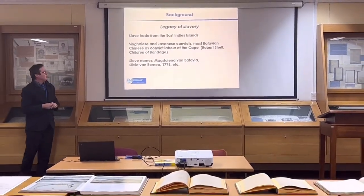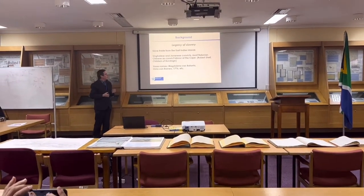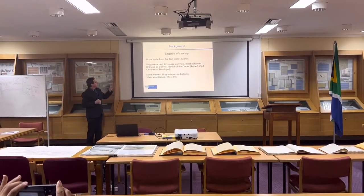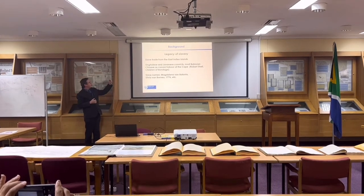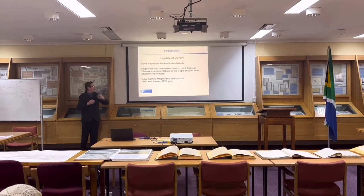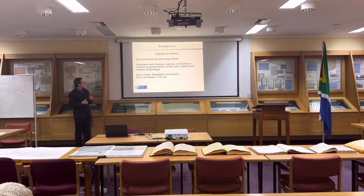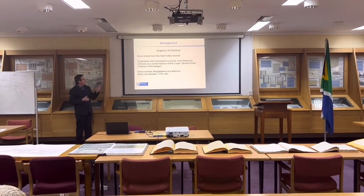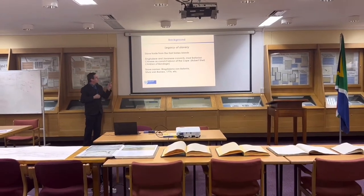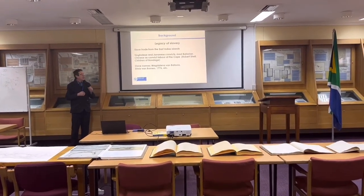The legacy of slavery was one of the most pivotal aspects that stood out in the history between the Dutch East Indies and the Cape. There was quite a large slave trade that took place from the East Indies islands. Ceylonese and Javanese convicts were also brought to the Cape — most of them were Batavian Chinese who worked as convict laborers at the Cape.